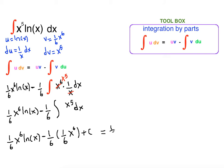So the answer is 1 sixth x to the sixth ln of x minus 1 sixth times 1 sixth is 1 thirty-sixth x to the sixth plus c. This is the final answer.